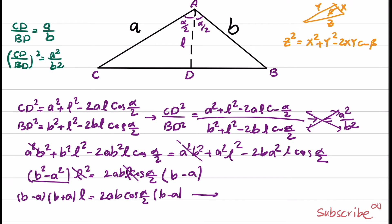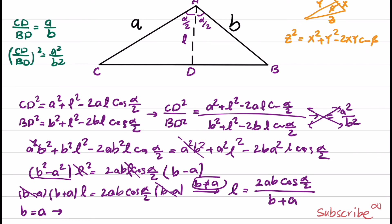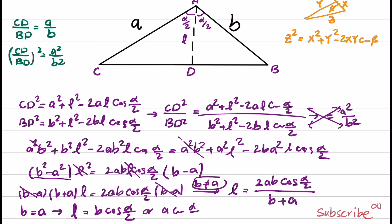To simplify further, we assume B is not equal to A. Under this assumption we can cancel the (B minus A) terms, giving L equals 2AB·cosine(alpha/2) divided by (B plus A). If instead we assume B equals A, the two triangles are identical, making them right triangles, and we can obtain L equals B·cosine(alpha/2), or equivalently A·cosine(alpha/2) since A and B are equal.